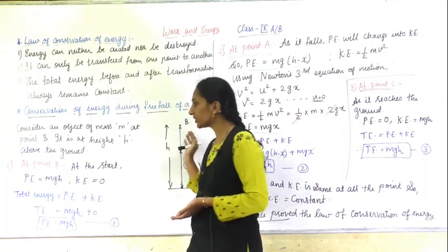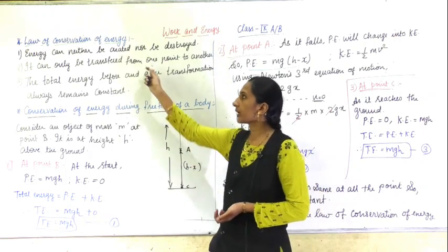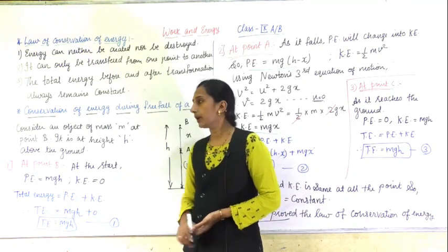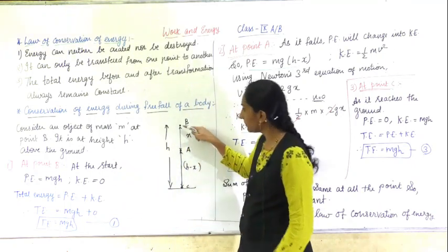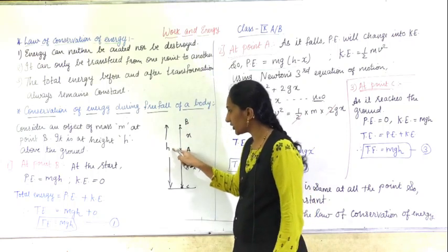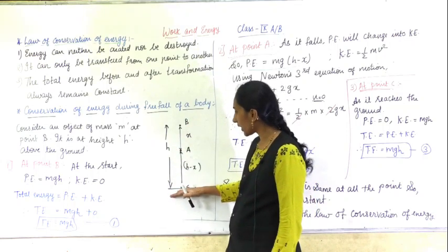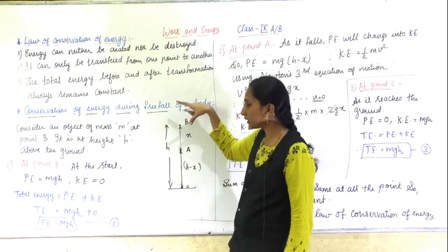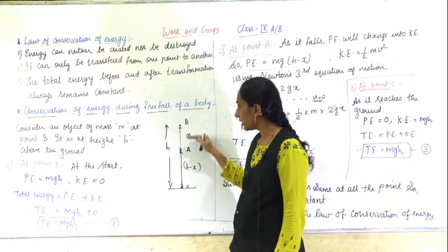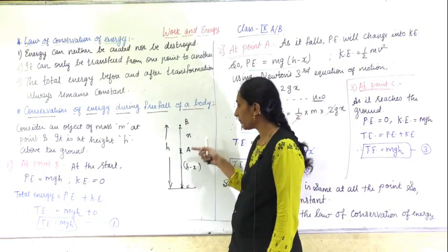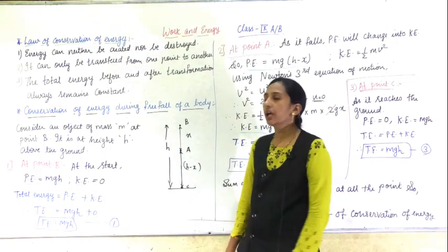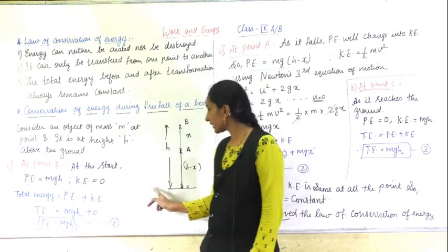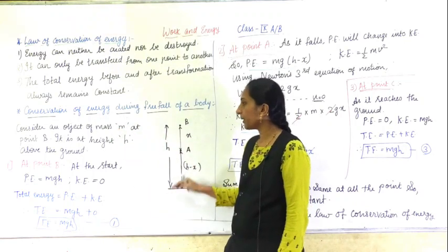If the total energies at the three points are the same, then we can confirm that the law of conservation of energy is proved. I have drawn a diagram. You can see B is an object kept at height H above the ground. I am going to release this object from point B and derive the equations at points B, A, and C. This object has mass M and is kept at height H above the ground.